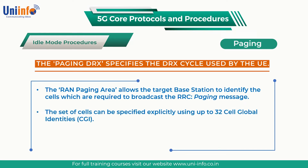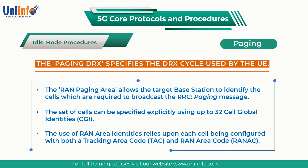The set of cells can be specified explicitly using up to 32 cell global identities. Alternatively, they can be specified using up to 16 RAN area identities. The use of RAN area identities relies upon each cell being configured with both a tracking area code and a RAN area code.